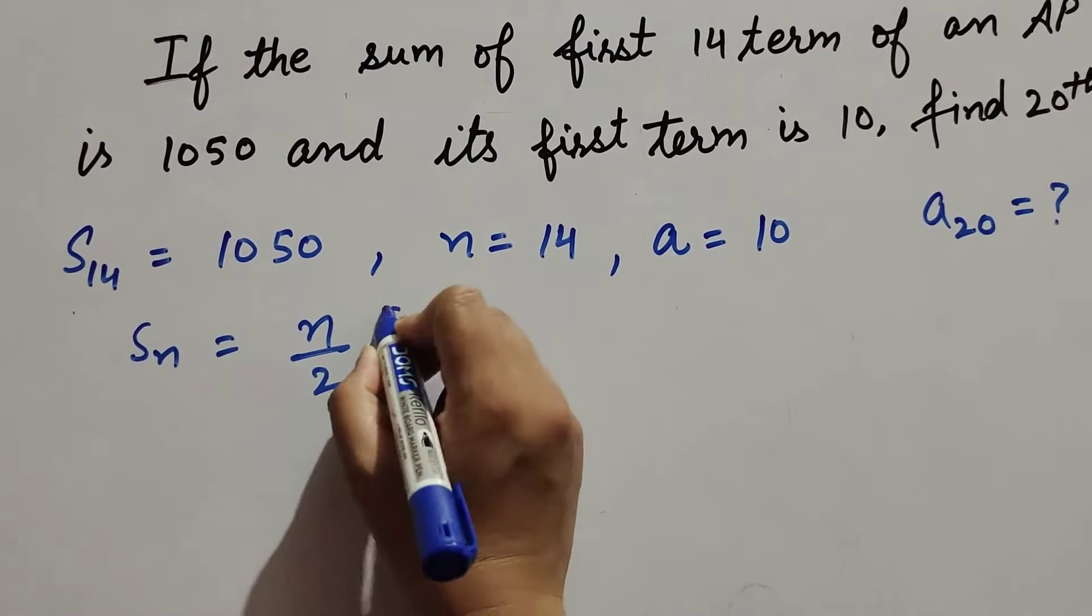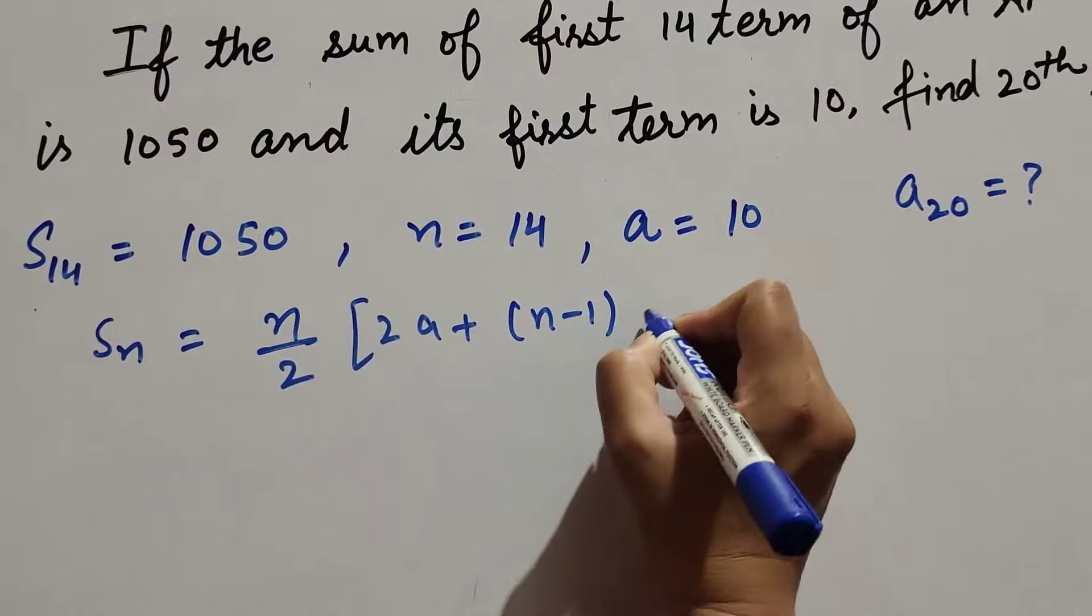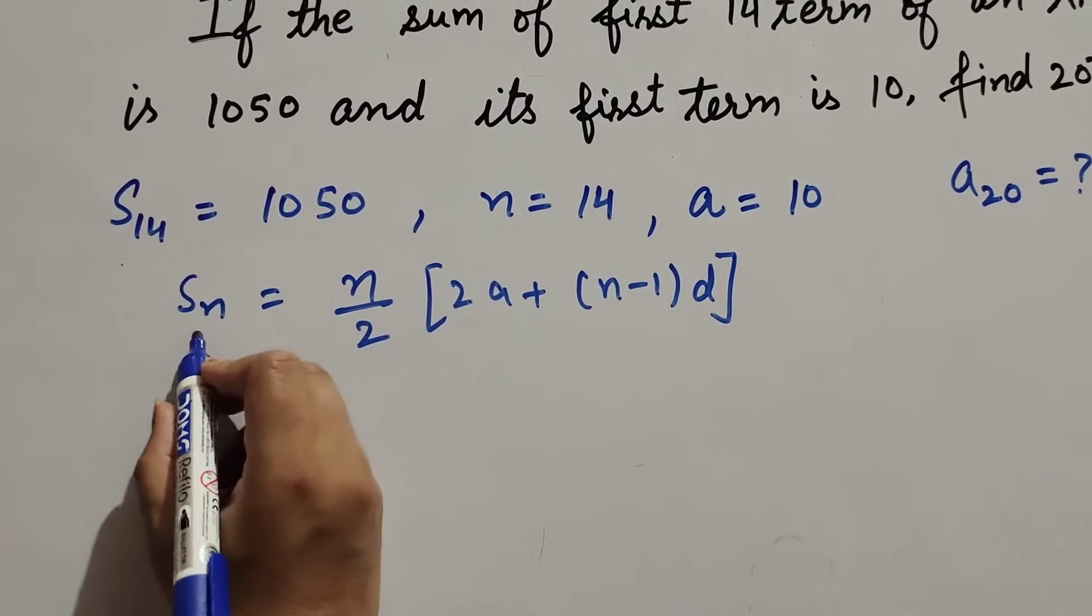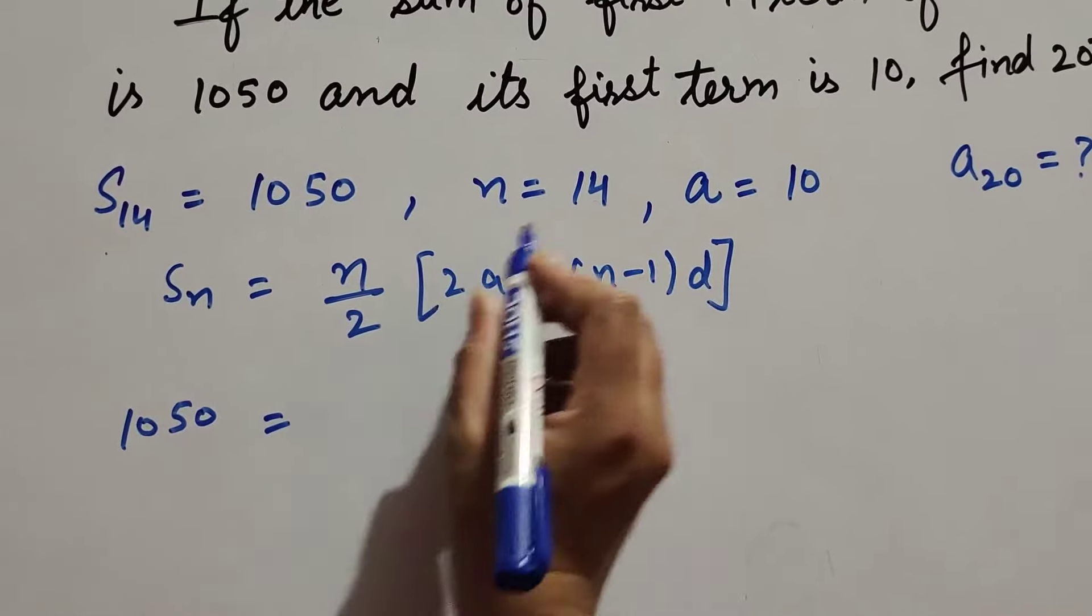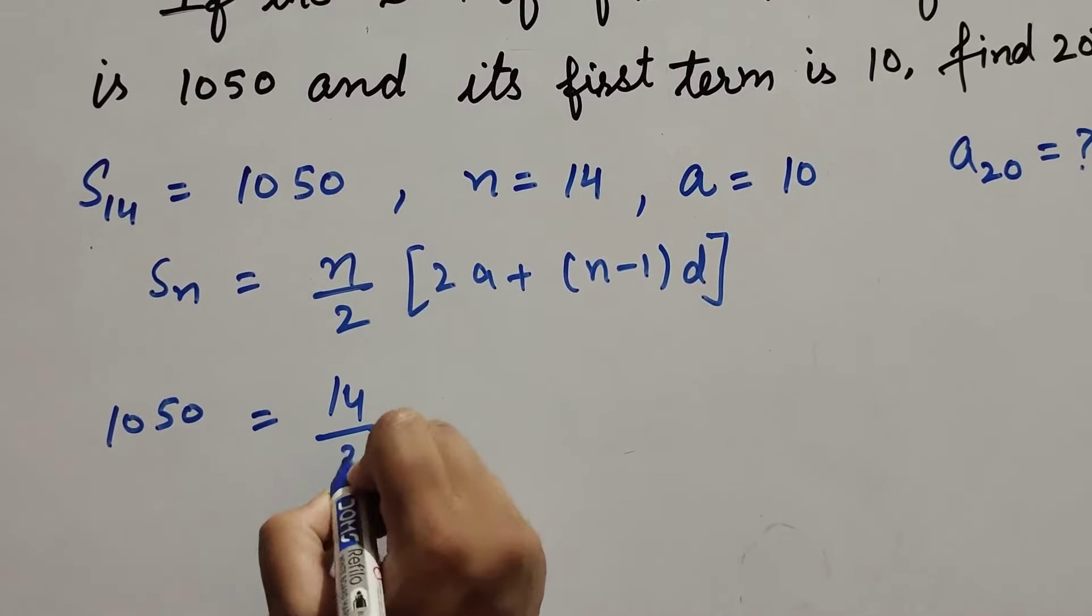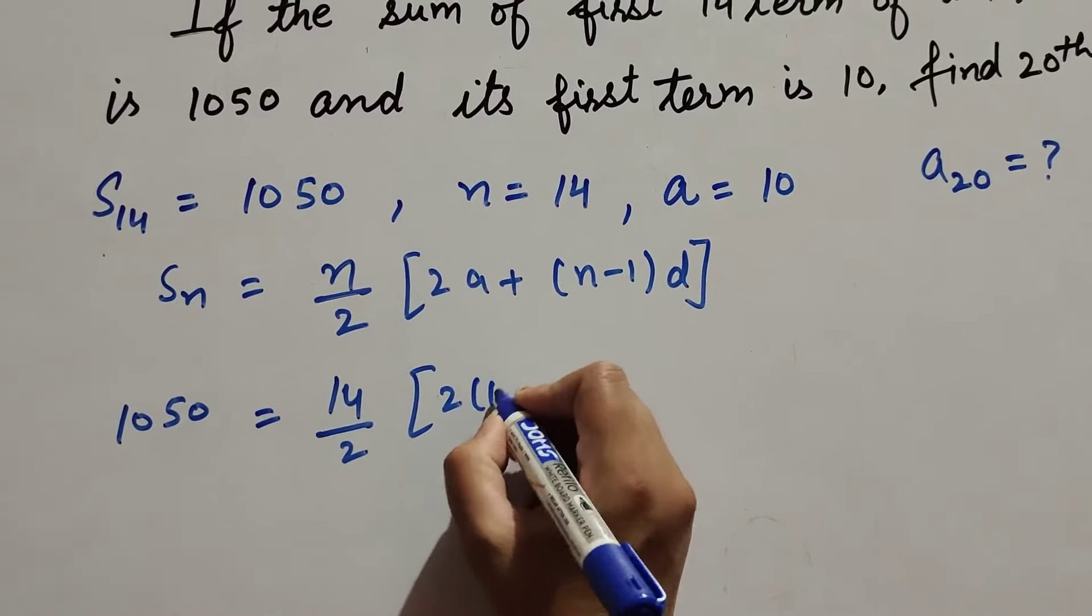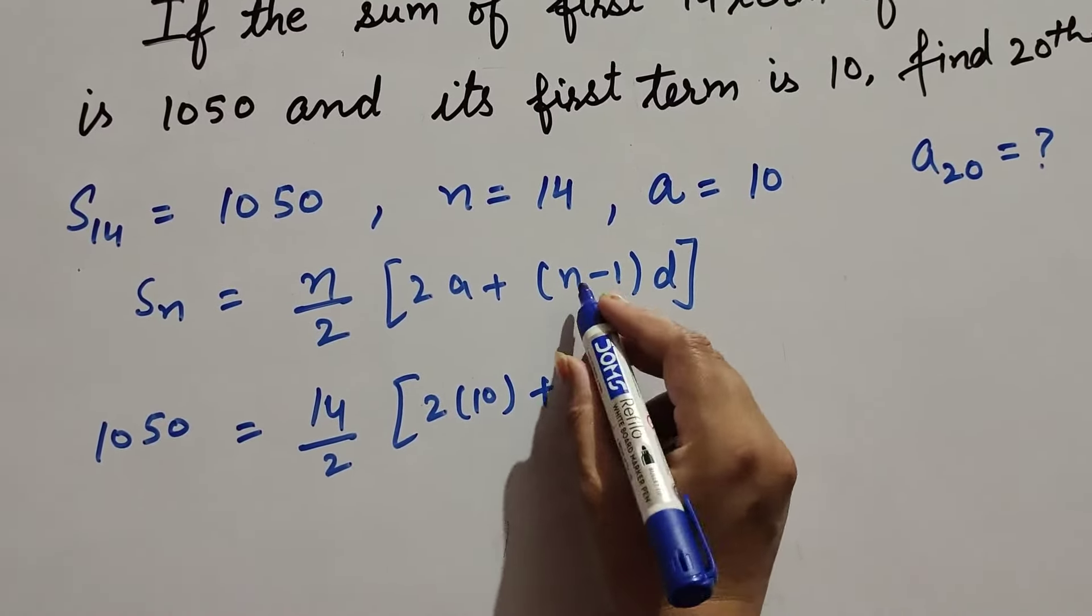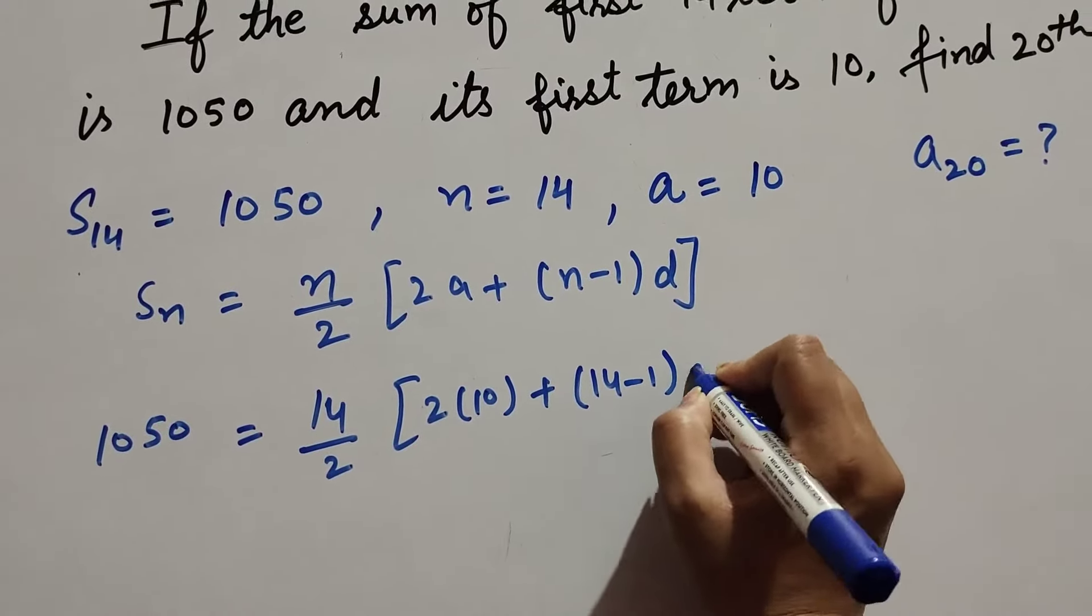So we know the formula to find sum of n number of terms: Sn equals n over 2, times [2a plus (n-1)d]. Sn equals 1050, n equals 14 over 2, times [a equals 10 plus (14-1)d].